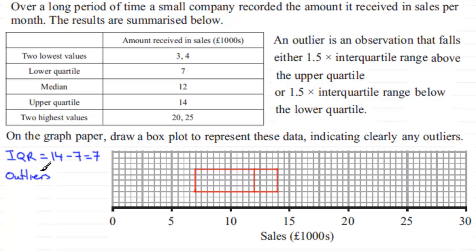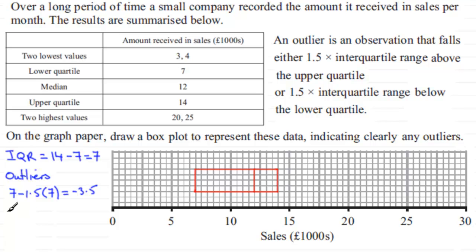For the lower outlier boundary, it's the lower quartile minus 1.5 times the IQR: 7 minus 1.5 times 7, which gives minus 3.5. For the upper outlier boundary, we take the upper quartile plus 1.5 times the IQR: 14 plus 1.5 times 7, which gives 24.5.